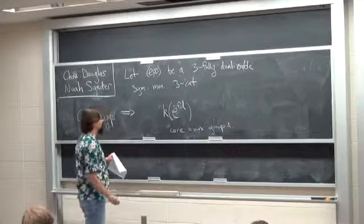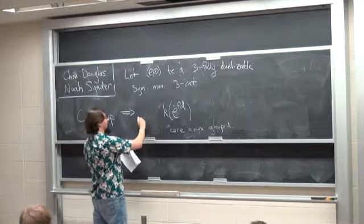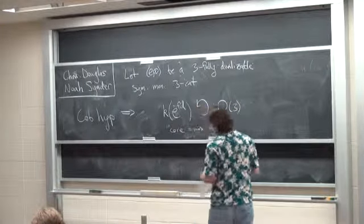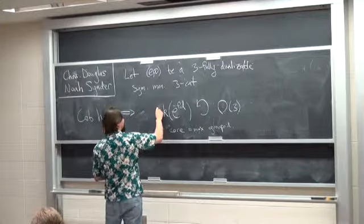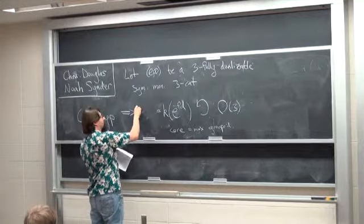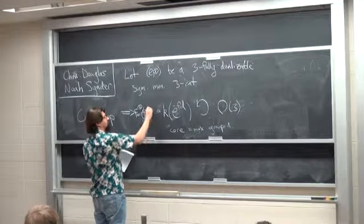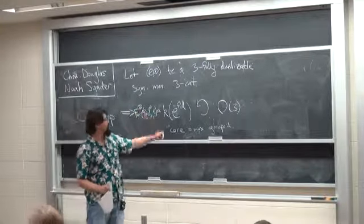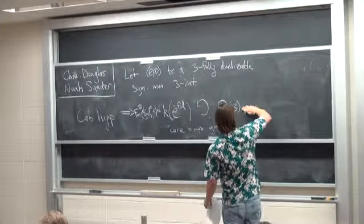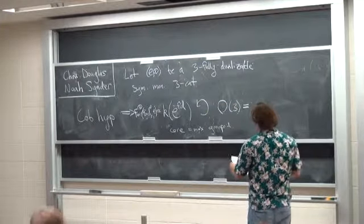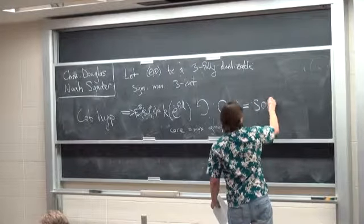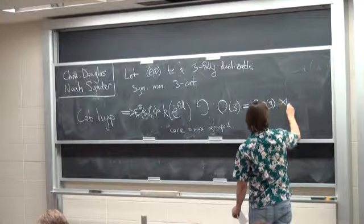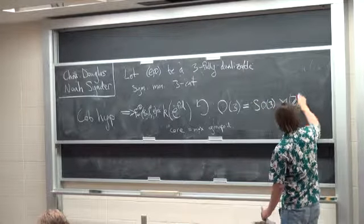—the maximal three-groupoid, then this thing should have an O3 action. That's because the cobordism hypothesis says that this is functors from the bordism category, the framed bordism category, into C, and the bordism category admits an action by changing the framing. This orthogonal group can be split as the special orthogonal group and Z mod 2, a group of order 2.